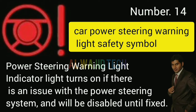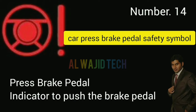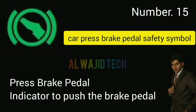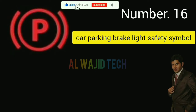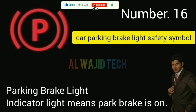Number fourteen: Car power steering warning light. The power steering warning light indicator turns on if there is an issue with the power steering system, and it will be disabled until fixed. Number fifteen: Car press brake pedal. The press brake pedal indicator prompts you to push the brake pedal.